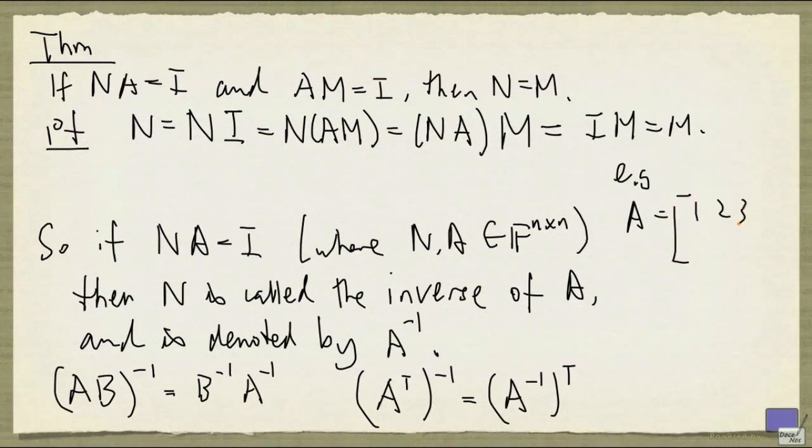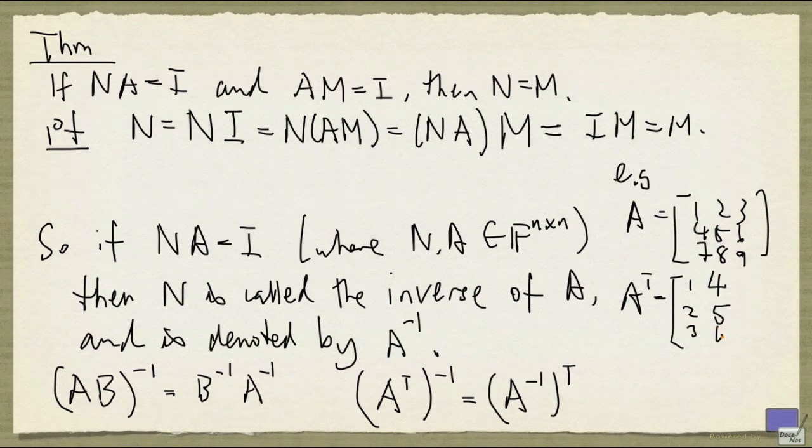So, for example, if A is 1, 2, 3, 4, 5, 6, 7, 8, 9, then A transpose is going to be 1, 2, 3. As I said, rows become columns, 4, 5, 6, and 7, 8, 9.